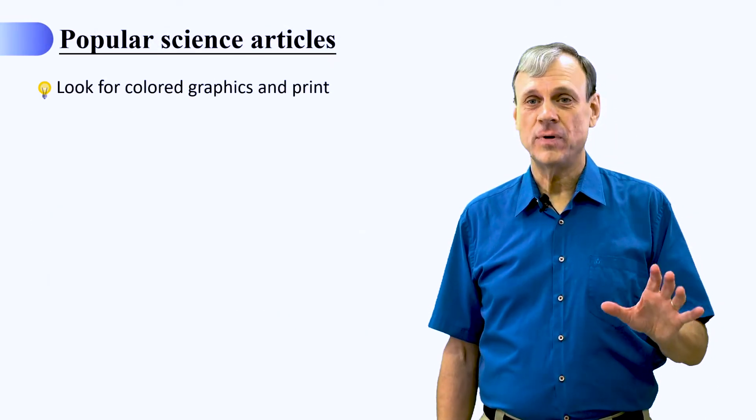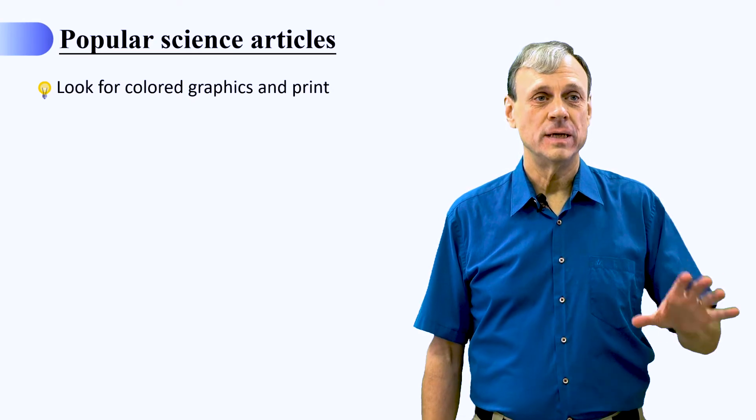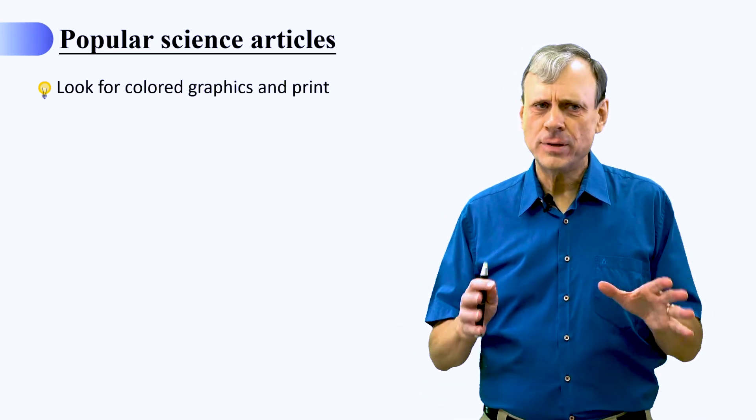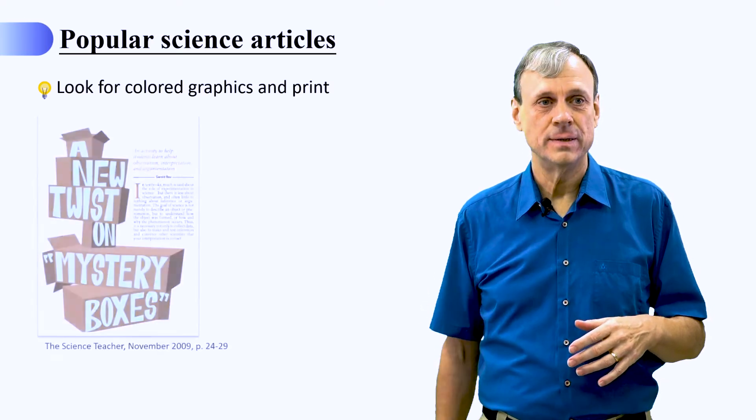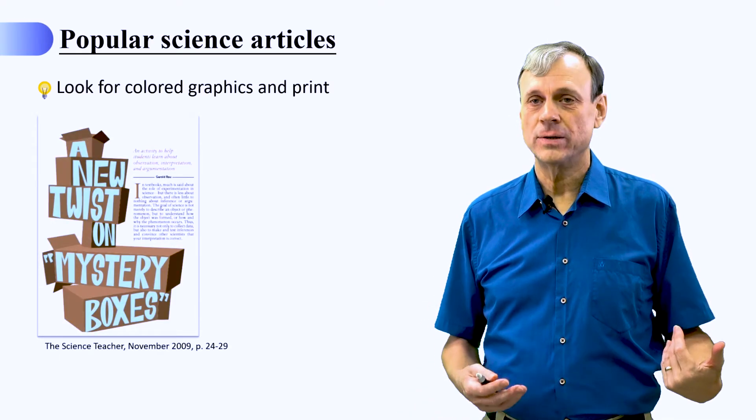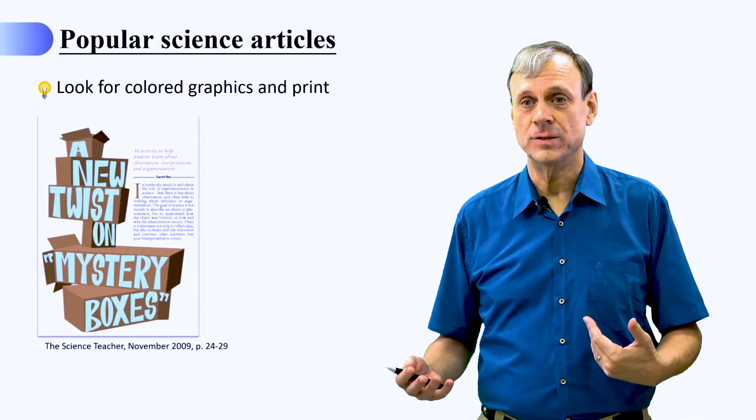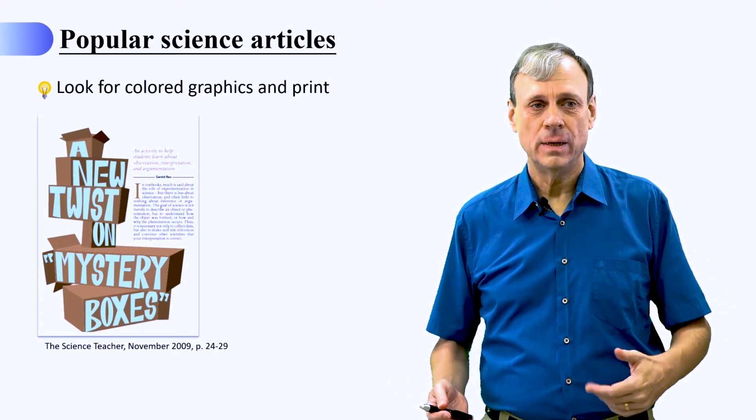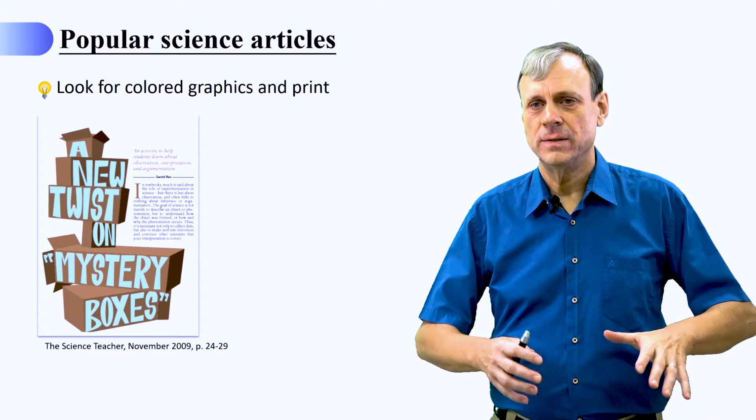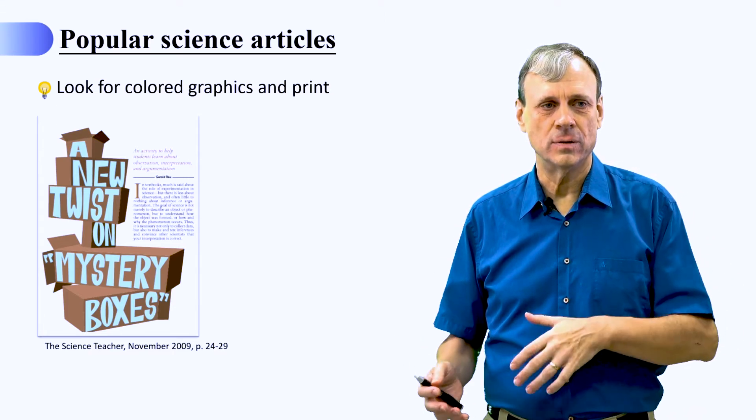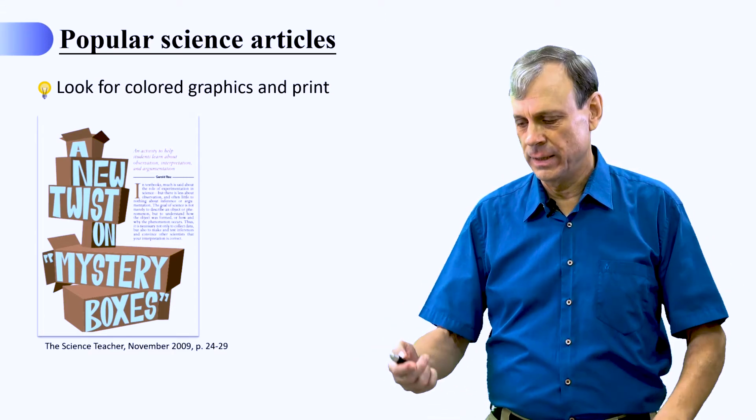The last type of article that we don't want to work with is popular science articles, and you can recognize these very easily because of the colored graphics or print. For instance, here's an article that I wrote for a science teacher magazine a number of years ago. If you look at it, you can see that it is a very different appearance than a standard research article with color and graphics.